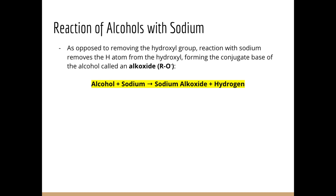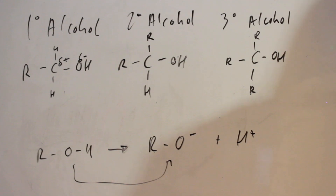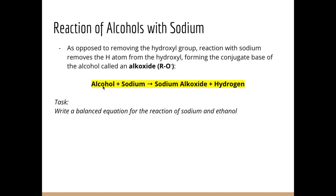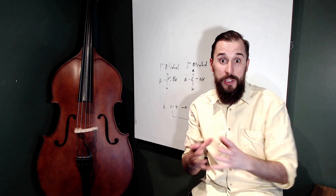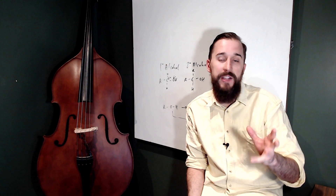The general reaction when we react with sodium is: alcohol plus sodium gives sodium alkoxide and hydrogen gas. If our alcohol is ethanol, we would have ethanol reacting with sodium to form sodium ethoxide salt and H2. The sodium severs the oxygen-hydrogen bond; we end up with the alkoxide, which forms an ionic bond with the sodium cation and the O minus. This is a less vigorous reaction compared to when sodium is added to water — the sodium-water reaction is quite spectacular and very exothermic. This reaction is still exothermic, but much less vigorous.